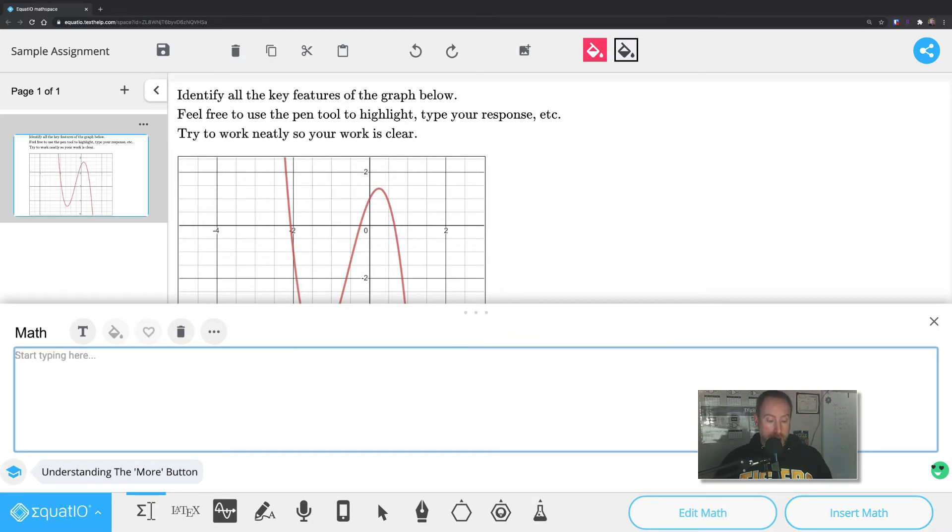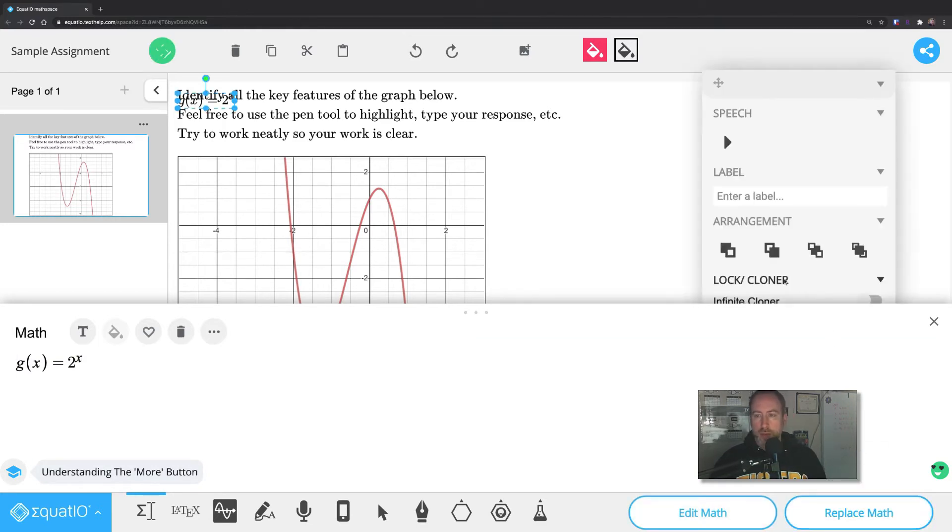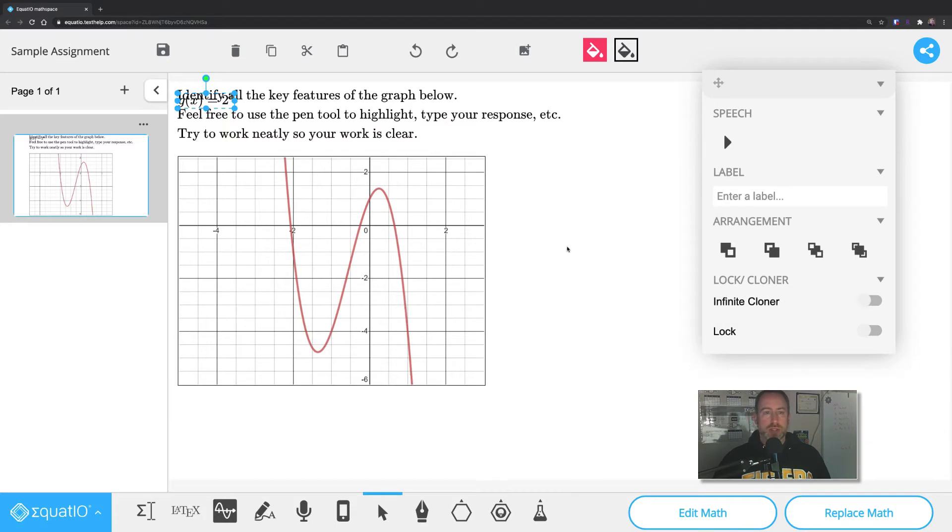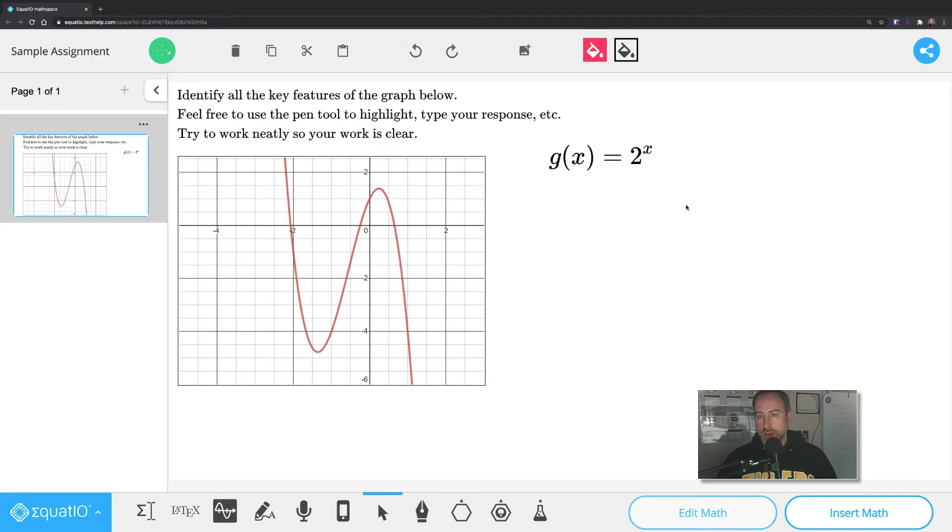But if you don't want math, and by the way, I never showed you how to put the math in. So let's do that. Let's say g of x equals 2 to the power of x. That's not this thing. But then you're going to click on the insert math on the bottom right-hand corner. It's going to insert a piece of text here. It's not actually text. It's a graphic.